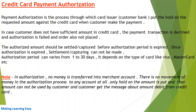The authorization period can vary from 1 to 30 days depending on the type of card. For example, Visa cards may have 7 days and some cards have 20 days of authorization period. One important note: in authorization, no money is transferred into the merchant account. There is no movement of money in the authorization process at all. Only a hold on the amount is put, and that amount cannot be used by the customer. The customer gets a message about the amount being debited from the credit card, but behind the scenes it is just a hold on the requested amount. Actual money movement into the merchant account happens at the time of settlement, not at the time of authorization.